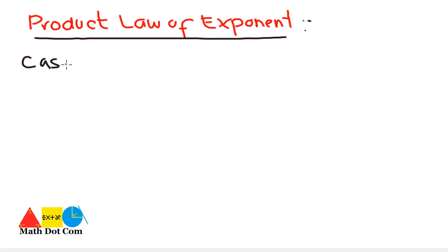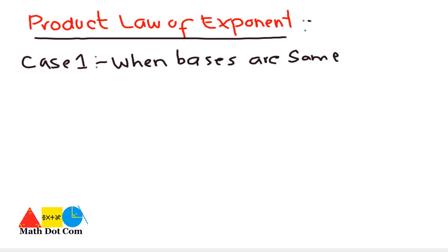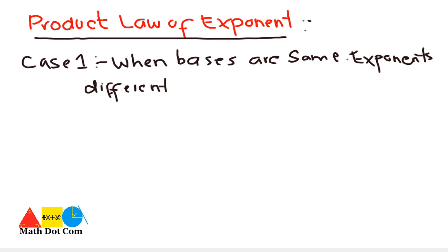The product law of exponents has two cases that you have to consider. Case one is when the bases are the same but the exponents are different.